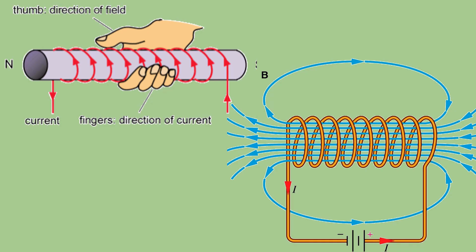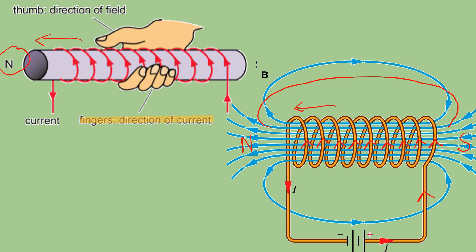Theoretically, you can also use the right-hand grip rule to determine the polarity of the solenoid. Imagine you grip the solenoid with your right hand so the fingers follow the direction of the current, and your thumb will point toward the north end of the solenoid. The current flows from the positive terminal to the negative terminal. So, this is the direction of the current flow through the coil. The thumb pointing towards the left means the left side is north and the right side is south, and the magnetic field lines will point away from north and towards the south.